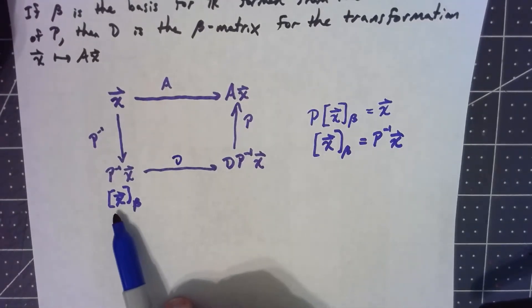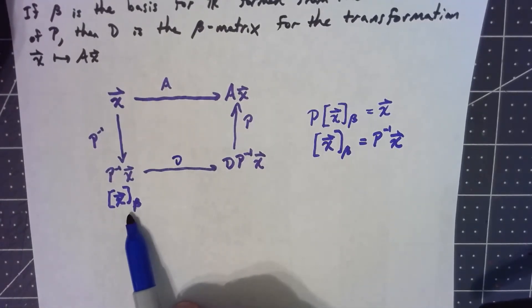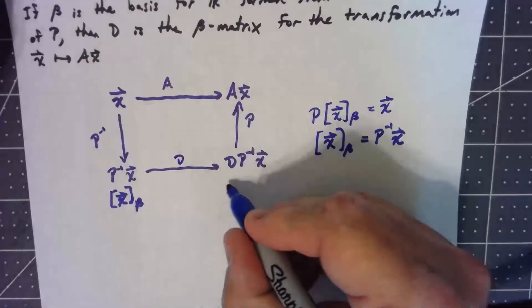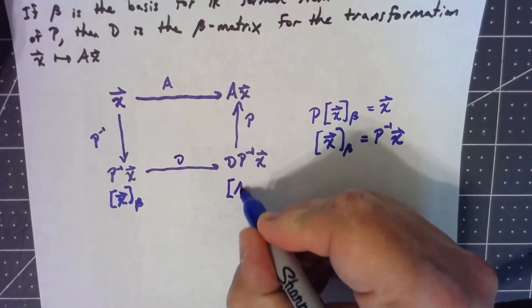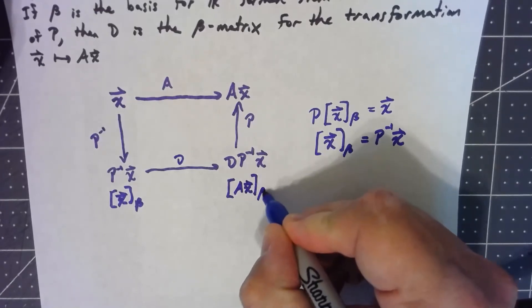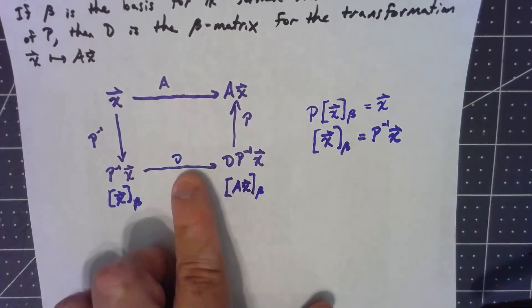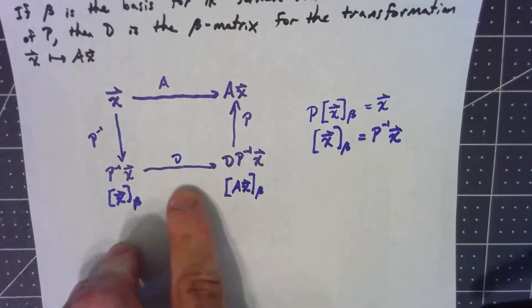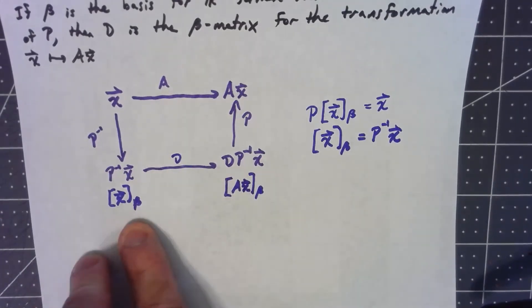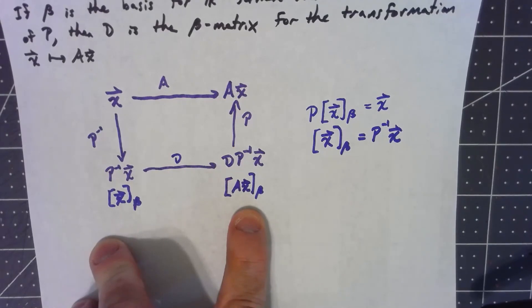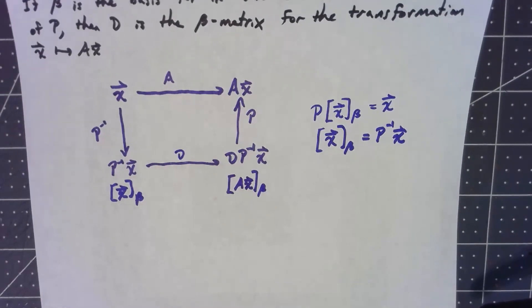is taking the coordinate vector for x to the coordinate vector for Ax with respect to the basis, which is exactly what this is saying. D is the beta matrix. D is the matrix that takes my coordinate vector to my coordinate vector of the transformed vector x. That's all this theorem is saying.